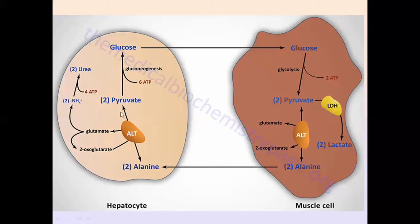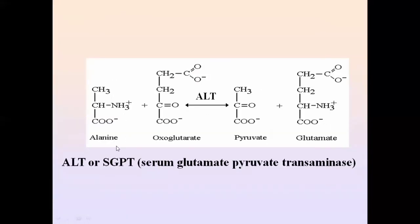The key reaction is that alanine is converted into pyruvate in the liver: alanine transfers its amino group to oxoglutarate. The oxoglutarate takes up this amino group and becomes glutamate. Alanine, losing its amino group, becomes pyruvate. Because there is a transfer of the amino group between glutamate and pyruvate, the enzyme is known as glutamate-pyruvate transaminase (GPT).